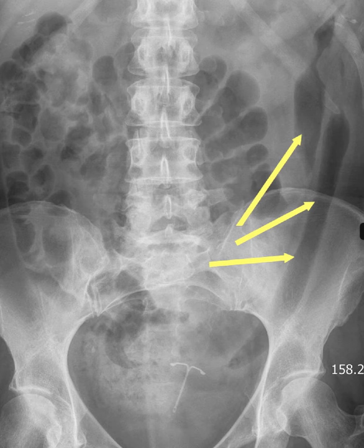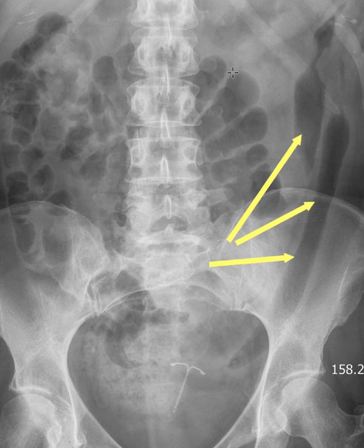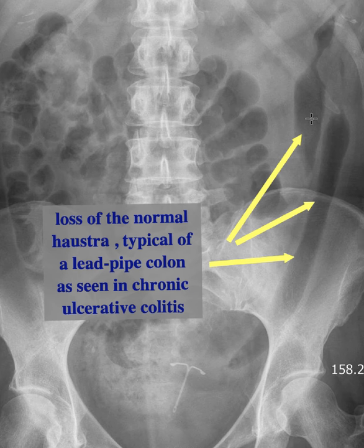The major abnormality here is the colon on the left side of the abdomen. You can see that it's missing the normal haustra, which are the rounded indentations that you see in the normal colon. Instead, the colon is very featureless, almost straight. There is thickening of the wall of the colon indicating a bit of edema.